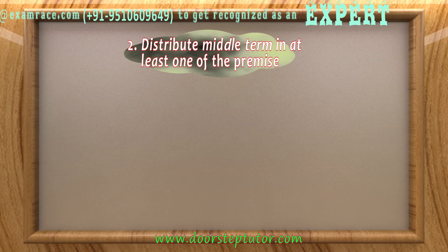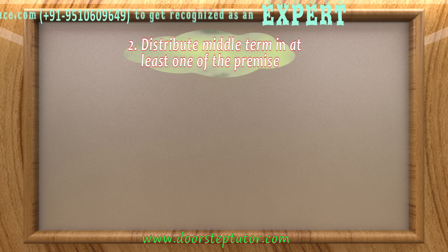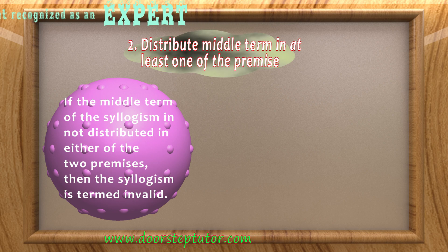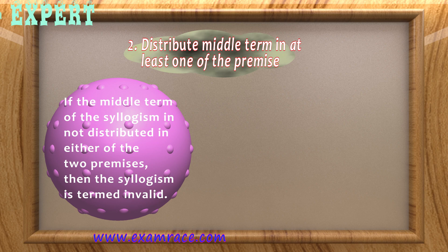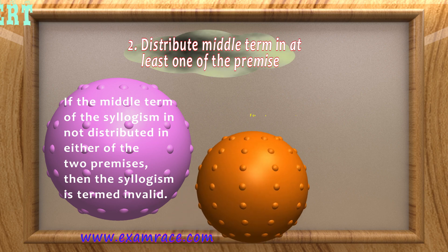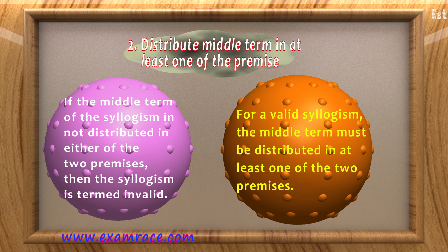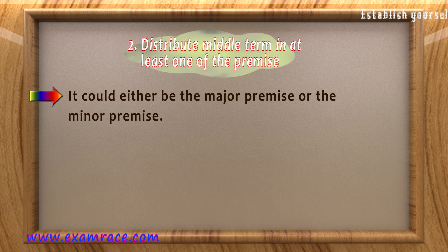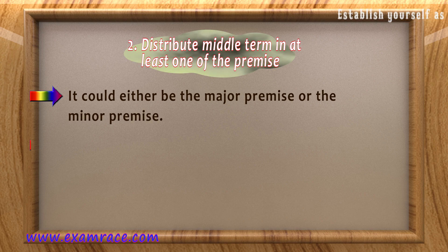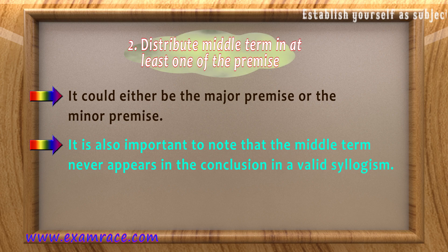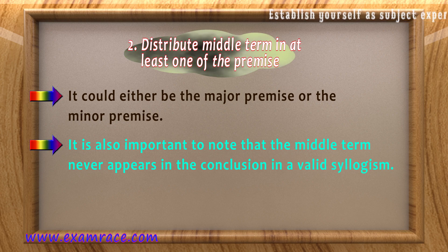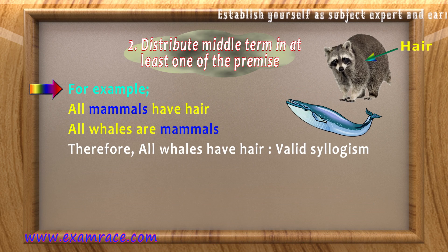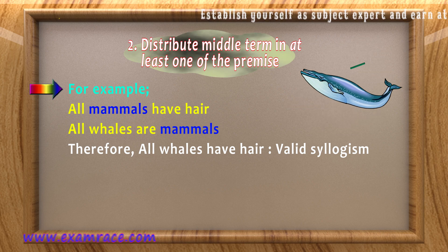Rule 2: Distribute the middle term in at least one of the premises. If the middle term is not distributed in either of the two premises, the syllogism is termed invalid. The middle term must be distributed in at least one premise — either the major or the minor premise. It is also important to note that the middle term never appears in the conclusion of a valid syllogism. For example: 'All mammals have hair; all whales are mammals; therefore all whales have hair.'